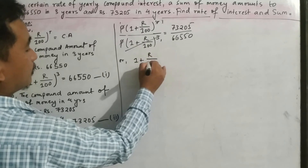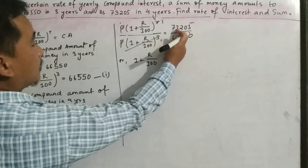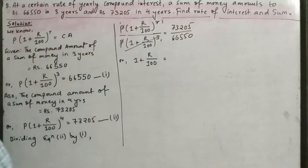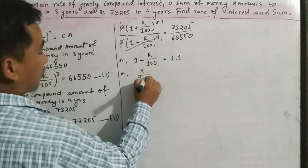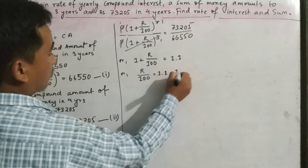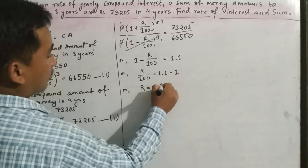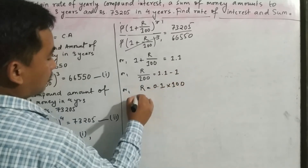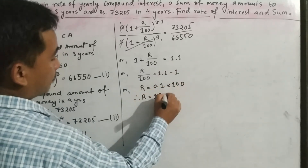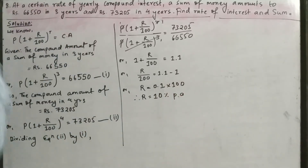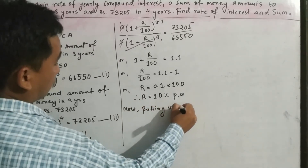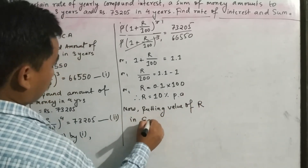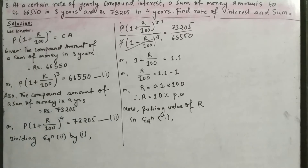So 1 plus R divided by 100 equals 73,205 divided by 66,550, which equals 1.1. Therefore R divided by 100 equals 1.1 minus 1 equals 0.1, so R equals 0.1 times 100 equals 10. Therefore the rate of interest is 10% per annum. Now putting the value of R in equation 1, we can substitute.